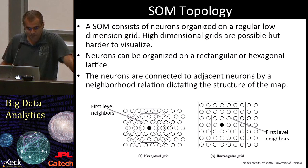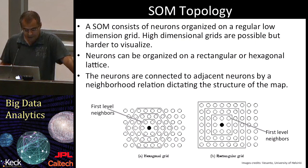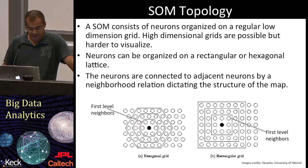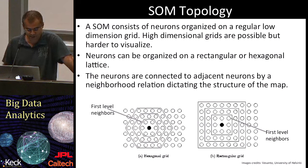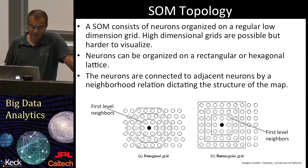Now let's see the topology. A SOM consists of neurons located on a regular grid, and this grid usually has a rectangular or hexagonal structure. Neurons are connected to adjacent neurons by a neighborhood relation. In these two figures, the neighbors of the units marked with a black dot are shown. As you can see, the structure also changes the neighbor set. For example, with the hexagonal grid, each neuron has six first-level neighbors, while with the rectangular grid they have eight first-level neighbors. And when the neighborhood is reduced to zero, the SOM acts like k-means.